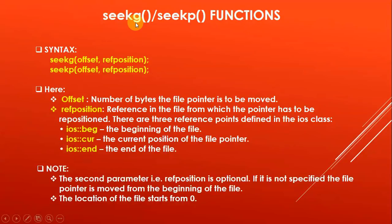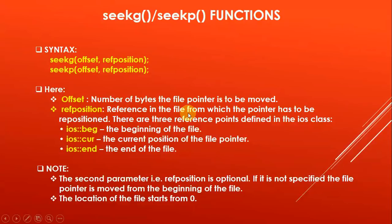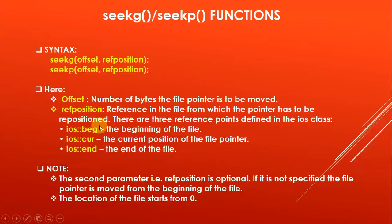Now let us understand the syntax of seekg() and seekp(). The syntax of seekg() is: seekg(offset, reference_position). Similarly, the syntax of seekp() is: seekp(offset, reference_position). The offset is the number of bytes the file pointer is to be moved. The reference position is the reference in the file from which the pointer has to be repositioned. There are three reference points defined in the ios class: ios::beg (from the beginning), ios::cur (from the current position), and ios::end (from the end of the file).